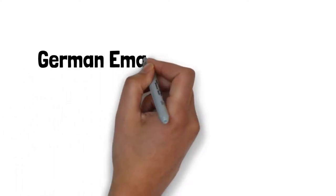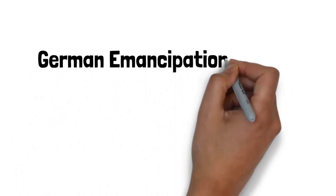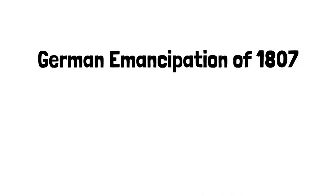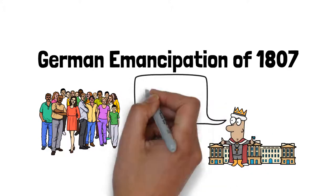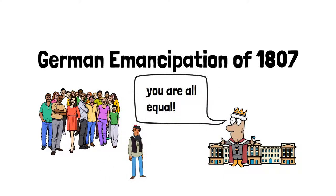This exoticism of the exception Jew lost its power when the German emancipation of 1807 gave all classes, including Jews, rights of equal condition. Jews were no longer perceived as foreign exotic objects, but simply another part of class society.